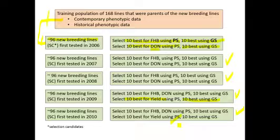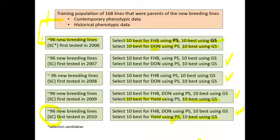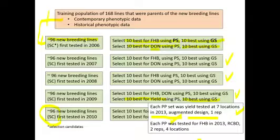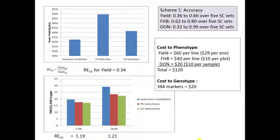What they can now do is look at the value of the 96 lines that were the selection candidates, compare them to the phenotypes of lines advanced by phenotypic selection, and also compare them to lines advanced using genomic selection. Here are the results showing accuracy using scheme 1, where the training population and prediction population are the same, and various accuracies for those traits.